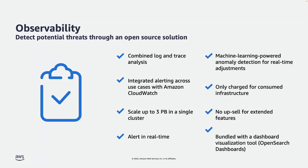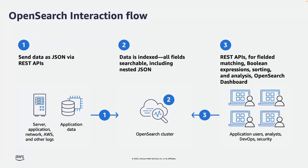Also, you can build a visualization by using Amazon OpenSearch dashboards where you can see your application landscape and how it works. Let's talk about how it works. On the input side, you are going to format data as JSON and send it to OpenSearch via REST API. Then Amazon OpenSearch will index all your data so that you can send requests against the OpenSearch cluster and it will give you results. Once your data is in the Amazon OpenSearch cluster, you can build OpenSearch dashboards.